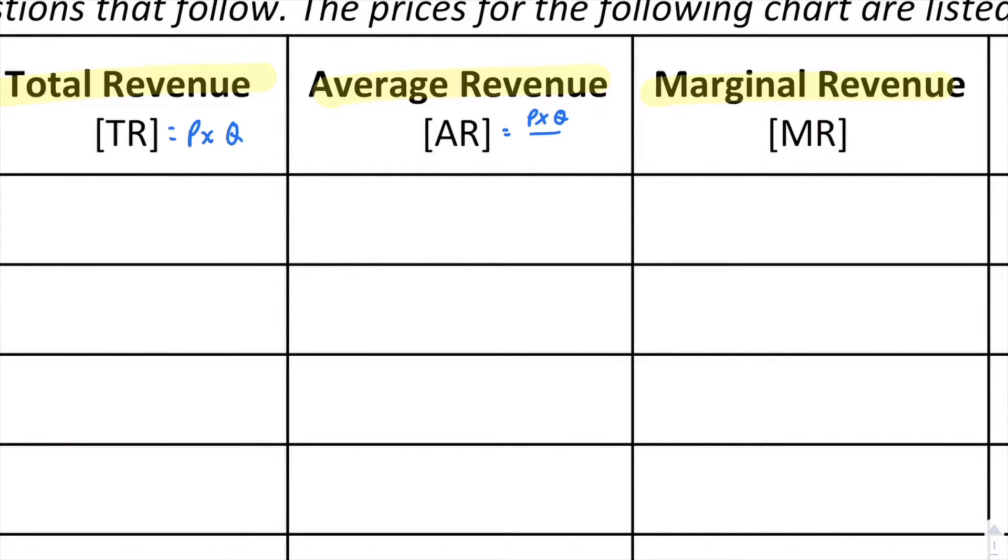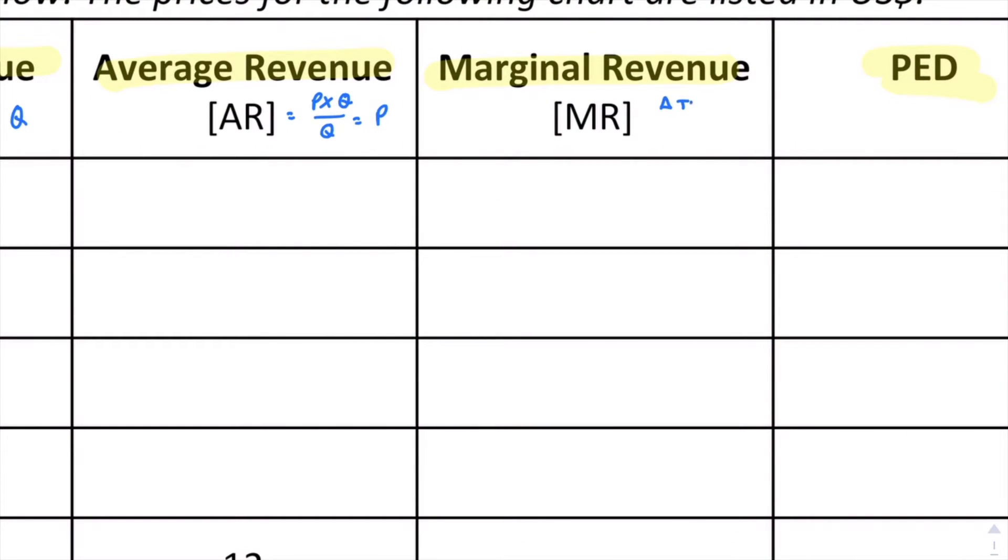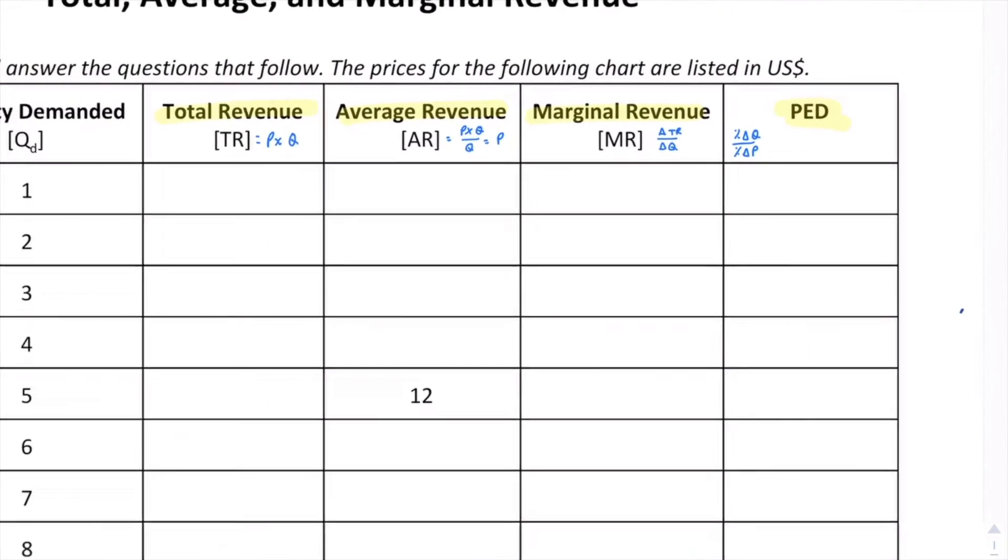Marginal revenue will be the change in total revenue divided by the change in quantity. In this case, since I'm going up by a quantity level of 1, it's just the change in total revenue. And not necessarily relevant to this video but important to know, PED is the percent change in quantity over the percent change in price.